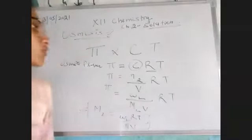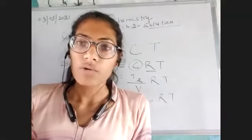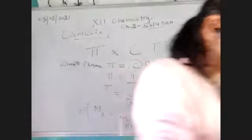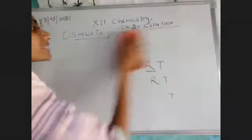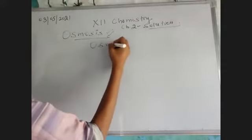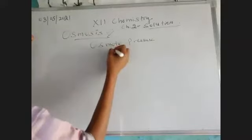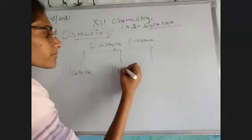On the basis of osmosis and osmotic pressure, we have basically three different types of solutions, which are known as isotonic solution, hypertonic solution, and hypotonic solution. On the basis of osmotic pressure, these three different types of solutions are: isotonic, hypertonic, and hypotonic.